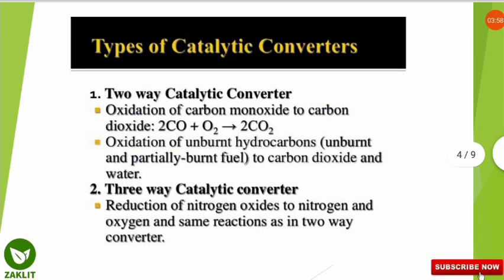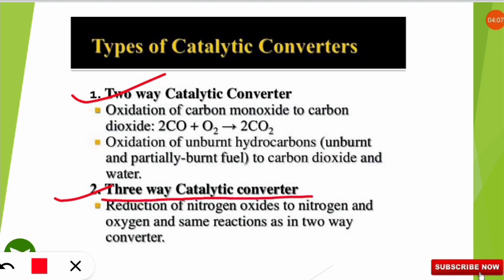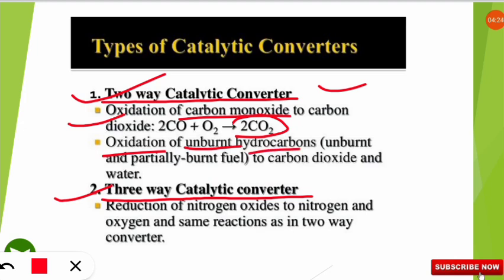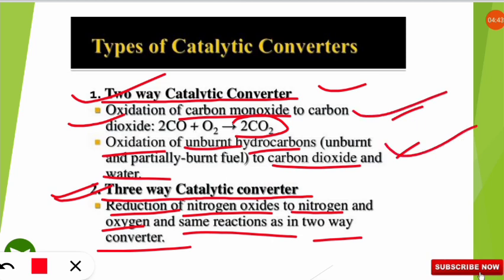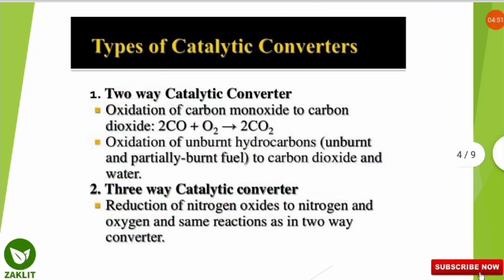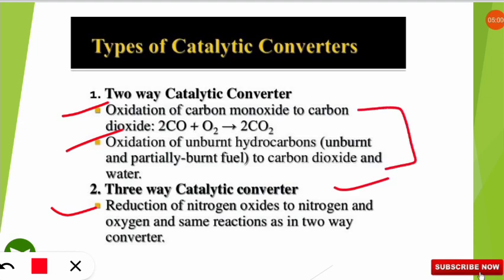The basic difference between a two-way and a three-way catalytic converter: the two-way catalytic converter oxidizes carbon monoxide to form CO₂ and also oxidizes unburnt hydrocarbons to CO₂ and water. The three-way catalytic converter does these same two steps and additionally reduces nitrogen oxides (NOx) to nitrogen and oxygen. So three things happen in the three-way converter versus only two in the two-way converter.